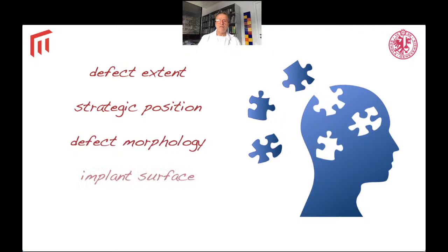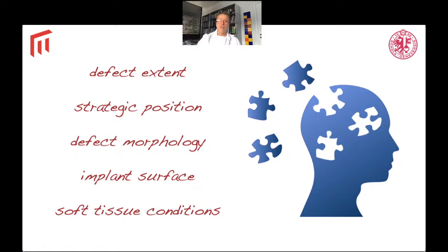When we decide to treat this disease, we need to take some factors into account. The defect extent, the strategic position, the defect morphology, the implant surface, and the soft tissue conditions are important factors to consider when choosing the appropriate approach, together with some systemic aspects — for example, whether the patient is smoking or whether it is an uncontrolled diabetic patient. Today we'll focus on the local factors.